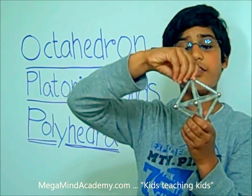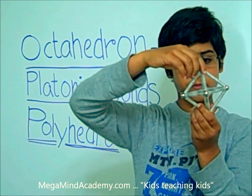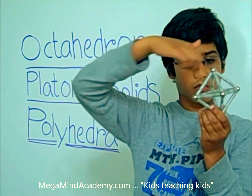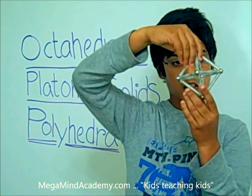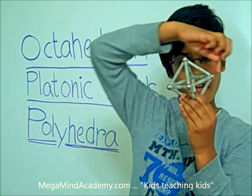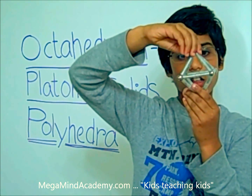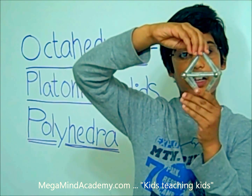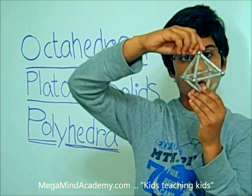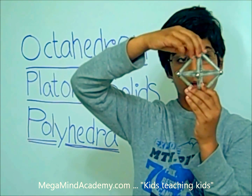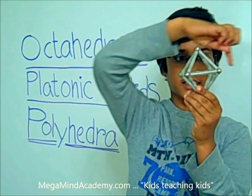There are twelve edges — four on the top, four on the bottom, and four on the sides. And there are six vertices — one on the top, one on the bottom, and four on the sides.